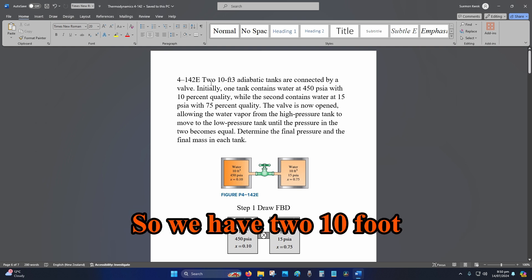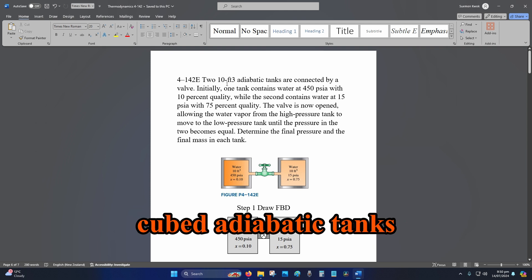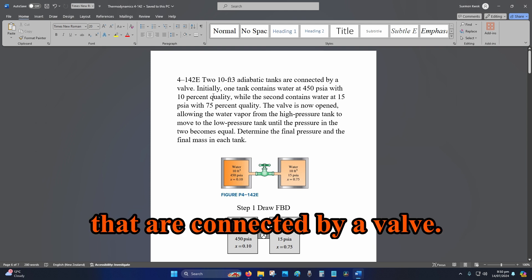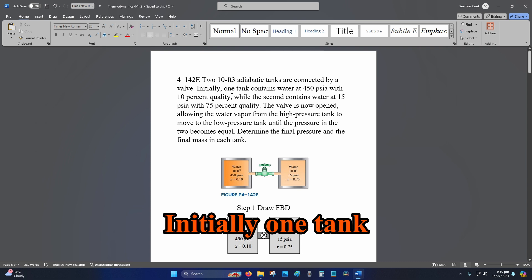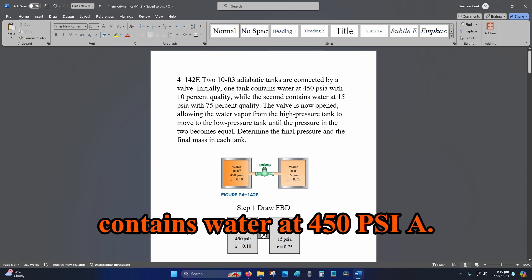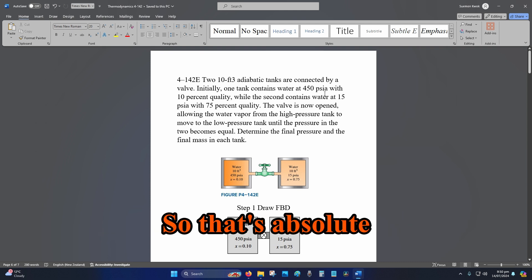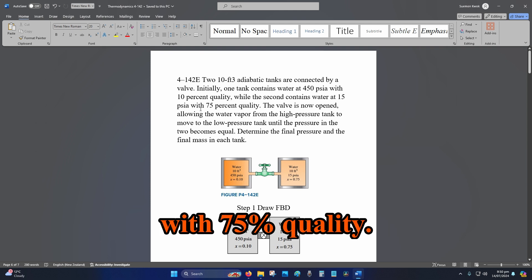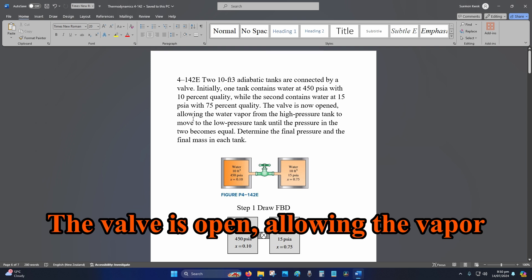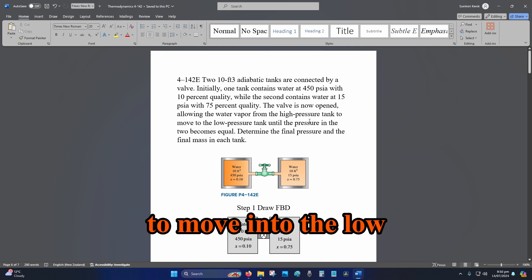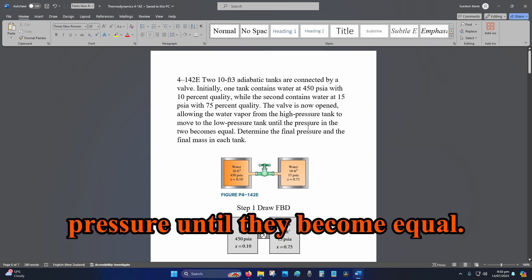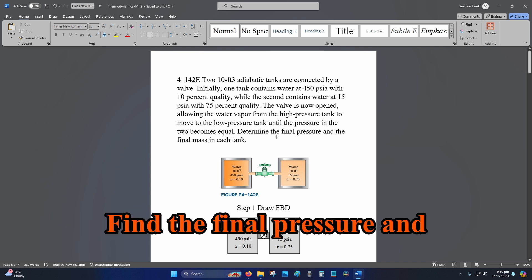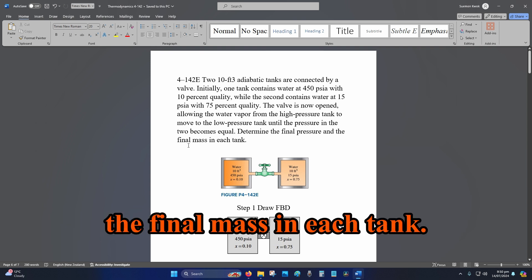So we have two 10 foot cubed adiabatic tanks that are connected by a valve. Initially one tank contains water at 450 PSI A with 10% quality, while the second contains water at 15 PSI A with 75% quality. The valve is open, allowing the vapor from the high pressure to move into the low pressure until they become equal. Find the final pressure and the final mass in each tank.